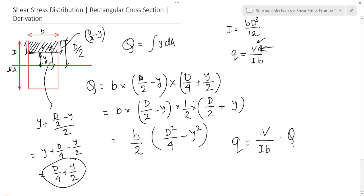So, V at a particular section is constant. I is constant. b is constant. So, this portion is constant. The only variable is Q as this is variable with the square of y.